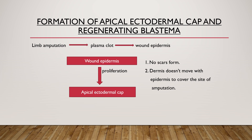Blastema is a kind of undifferentiated cell. Whenever limb amputation occurs, a plasma clot forms over the site, and after 6 to 12 hours, when the epidermis moves over the dermis, wound epidermis is formed. Wound epidermis further leads to proliferation and the apical ectodermal cap is formed.